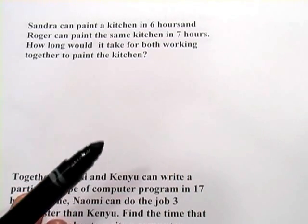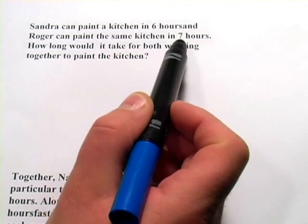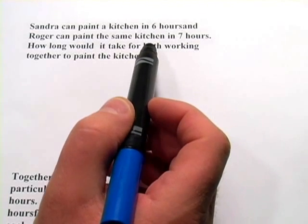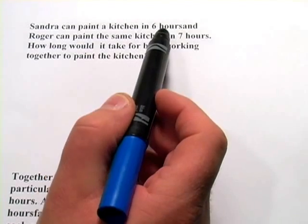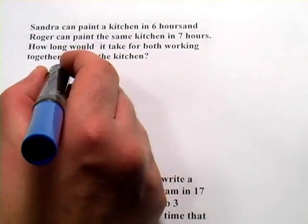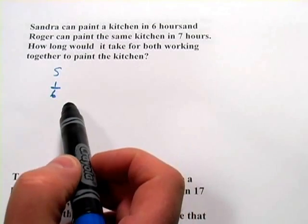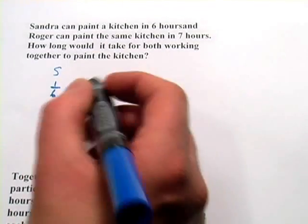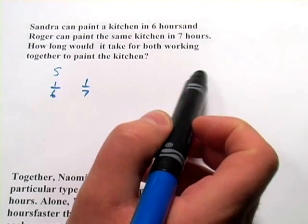Well, the way to do this, the trick, is to put this number we have here in terms of a rate per hour. So how much of this job can they get done per hour? Well, in the case of Sandra, she can get one-sixth of the job done per hour. So that's her rate. Roger can get only one-seventh of the job done per hour, because it takes him seven hours to do the whole thing.